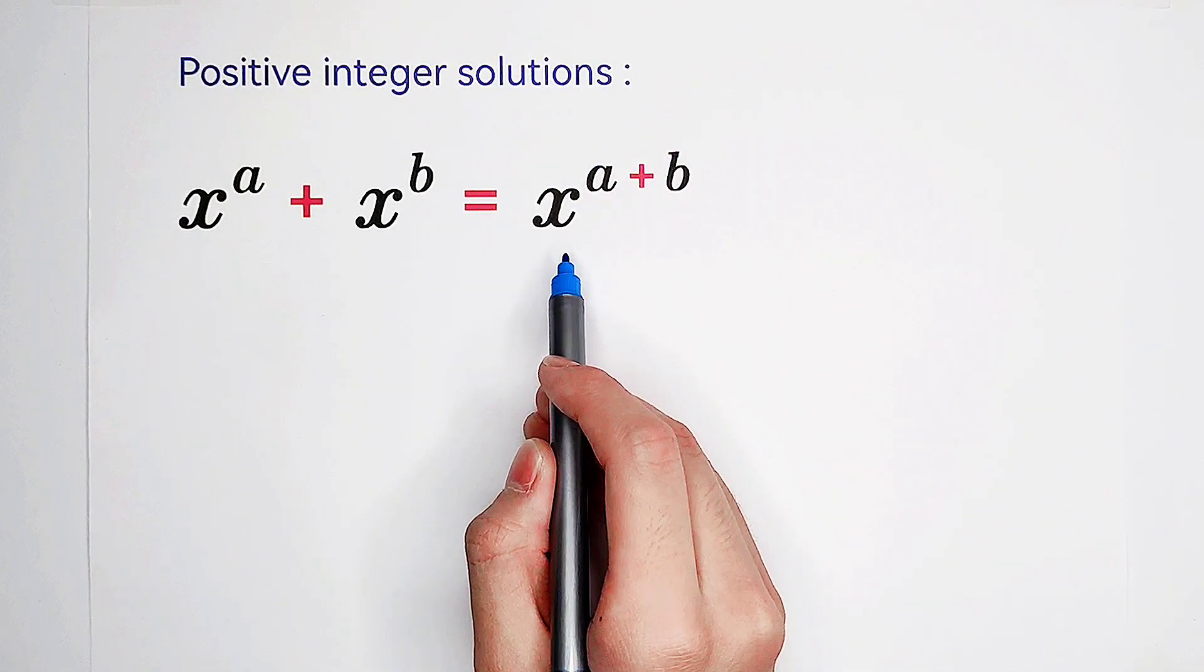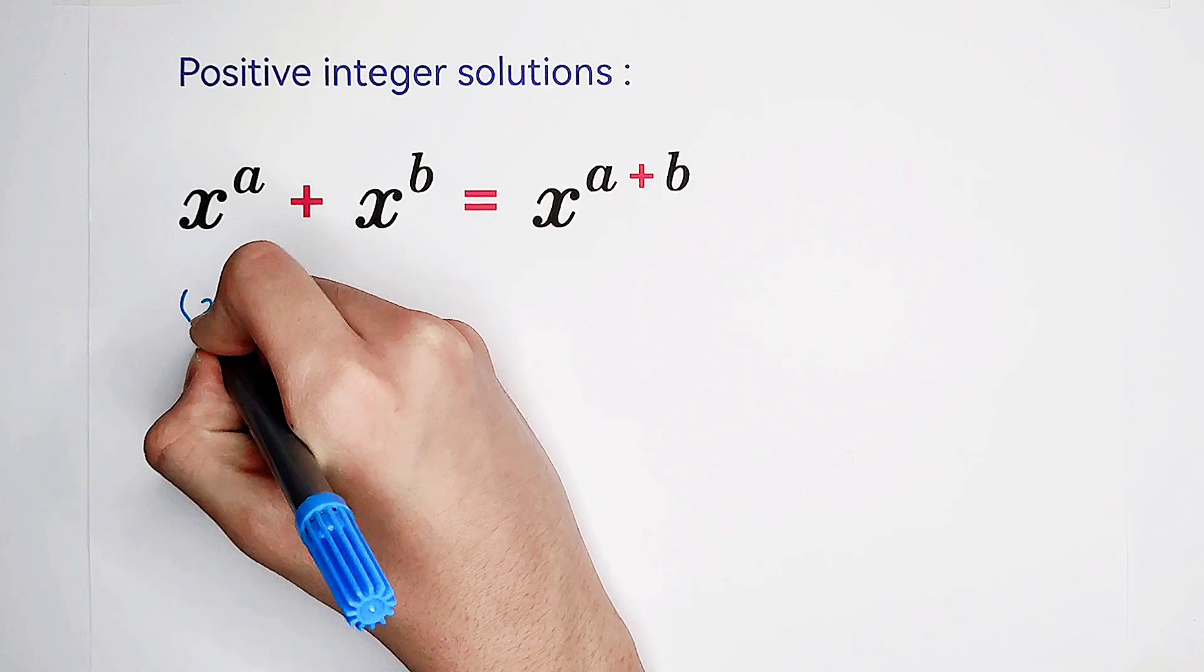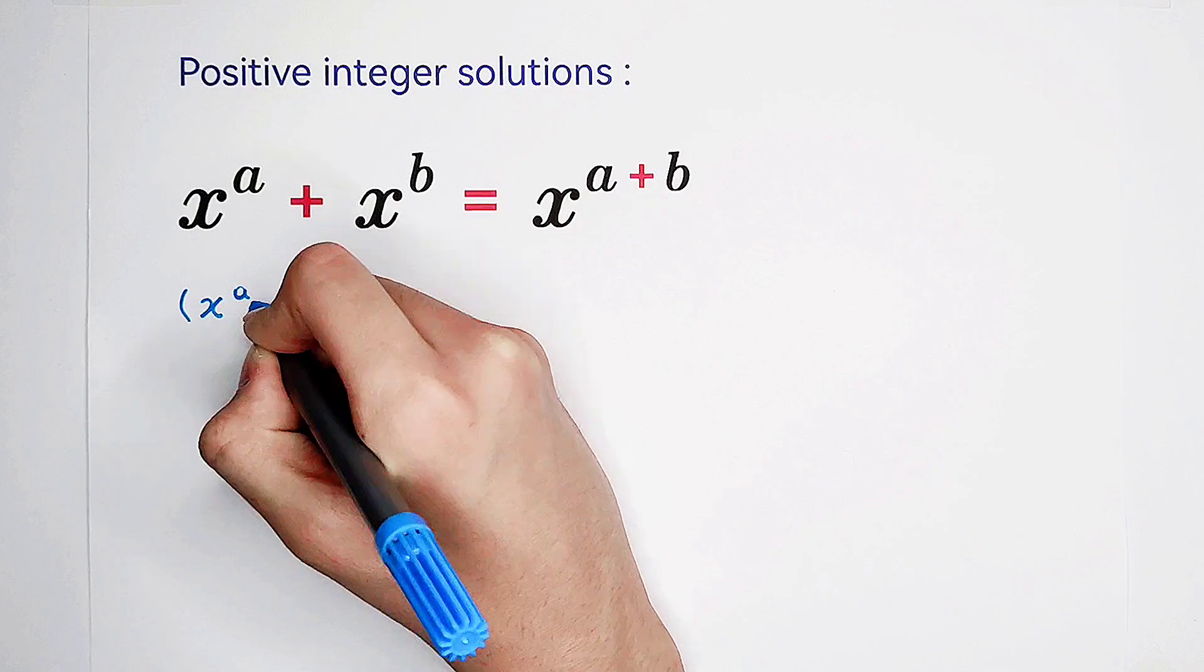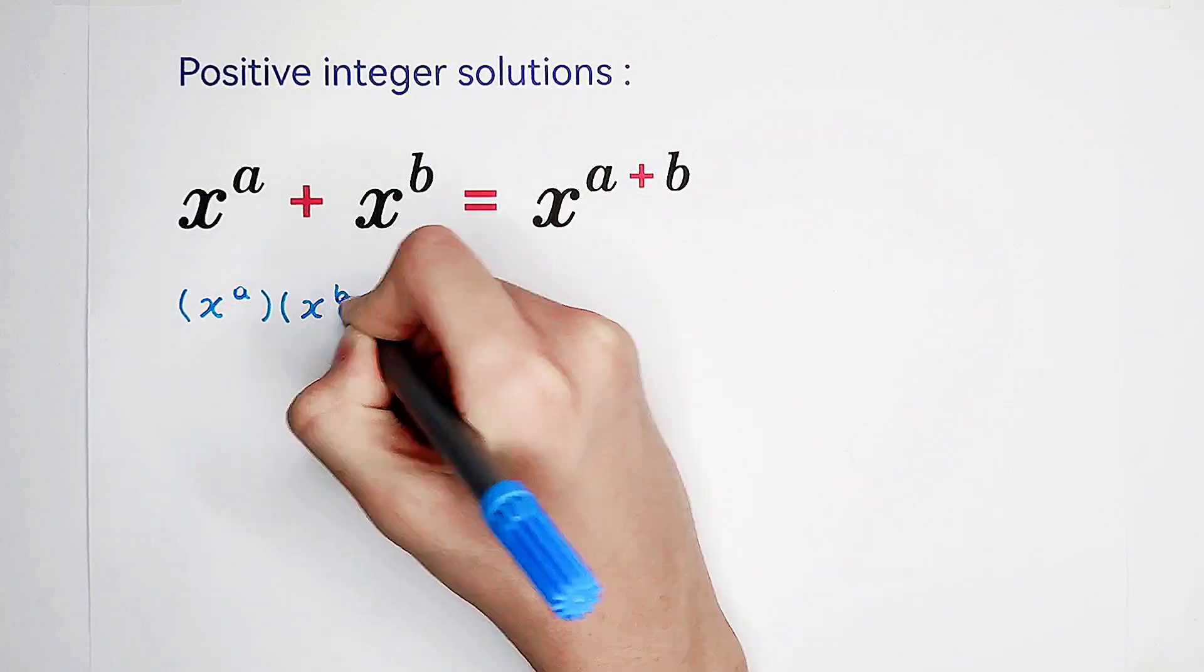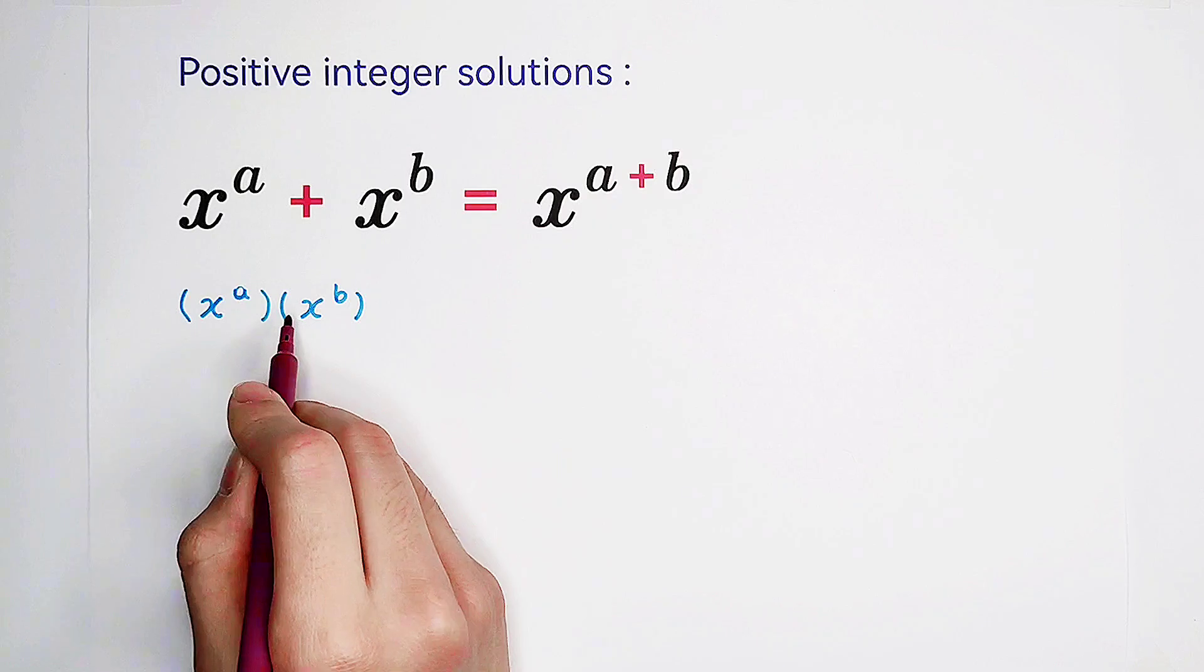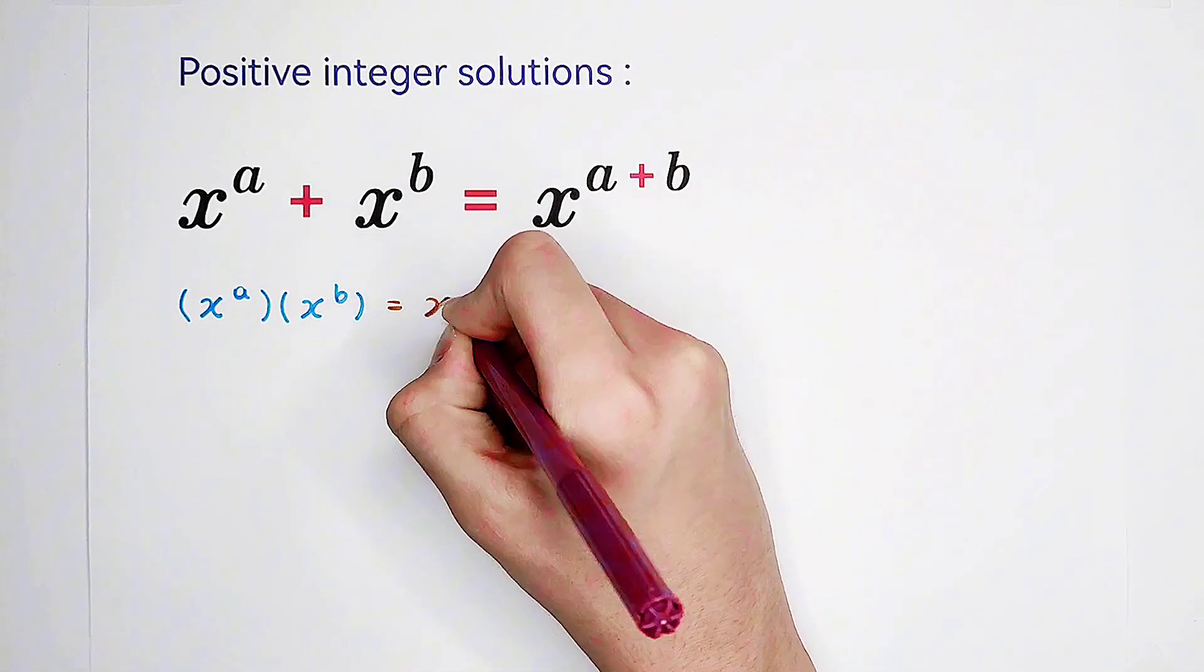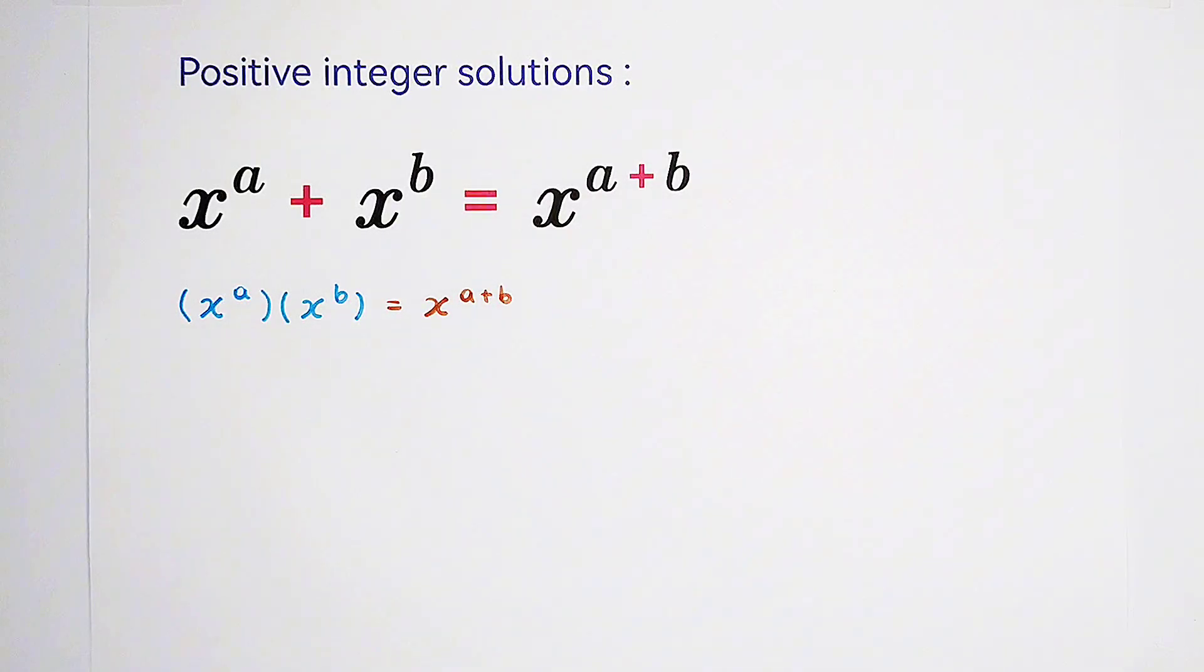Before the substitution, the right-hand side can be written as x to the power of a times x to the power of b. Why? Because we have the formula x to the power of a times x to the power of b equals x to the power of a plus b.